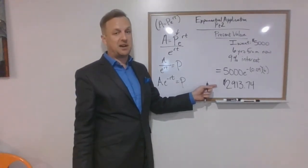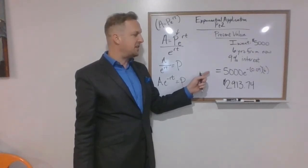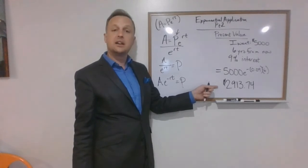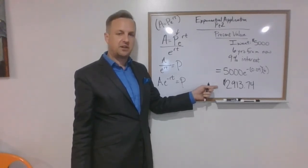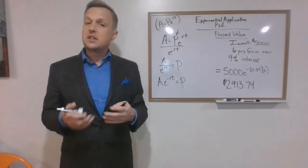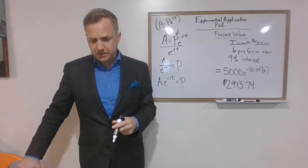And that means that if 6 years from now, this is kind of the same discussion we were having earlier, only from the other end. If I want $5000 six years from now at 9% interest, I need to bring $2913.74 to the bank.